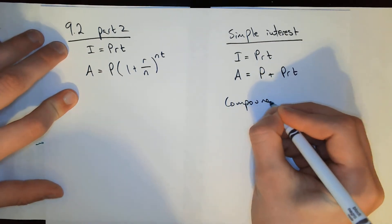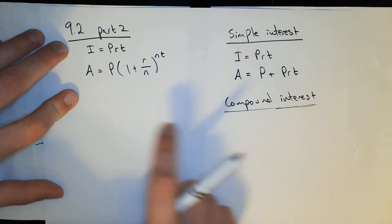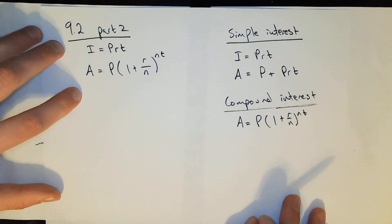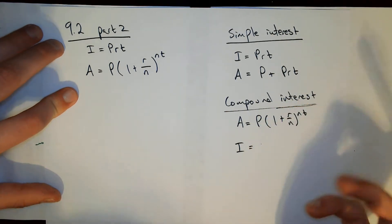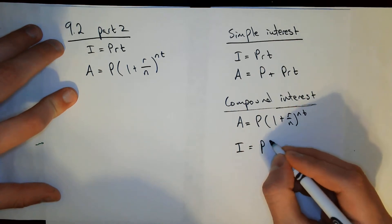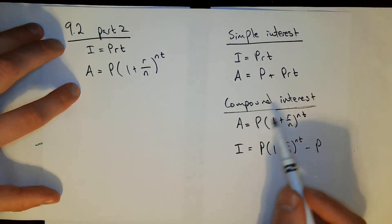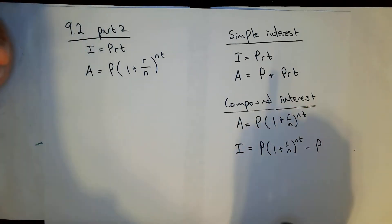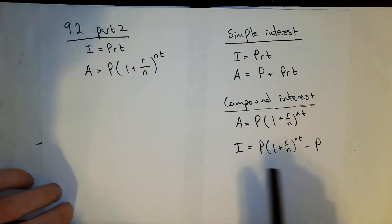For compound interest, it's a little different because of the way the formula is set up — that's just an effect of the algebra. The compound formula gives us the total amount A directly. If you want to find interest earned, you take that total amount A minus the principal P. For example, if you put $5,000 in an account and at the end of some years you have $6,200, the interest earned is just the difference between those two numbers.